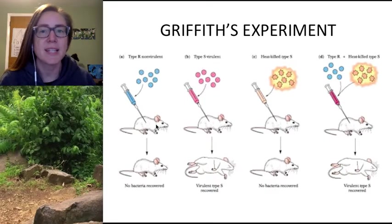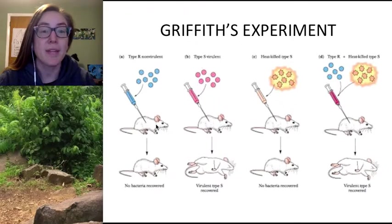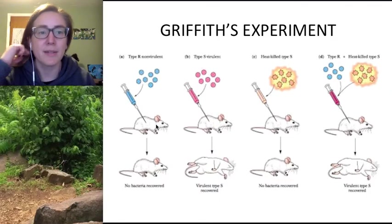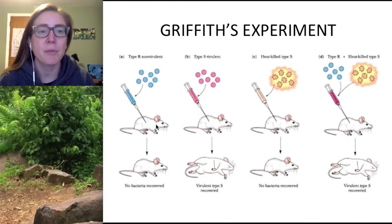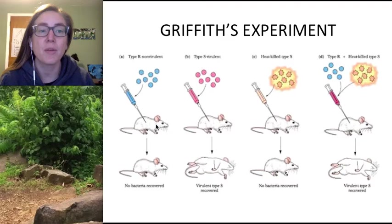We're going to start with Frederick Griffith's experiment. Frederick Griffith, in the 1920s, observed many cases of pneumonia — many caused by the 1918 flu pandemic, but also because we did not have antibiotics back then. He noted that some people were able to recover from their pneumonia infections while others were not, leading him to ask: what makes some pneumonia-causing bacteria virulent or deadly, and what makes some non-virulent?